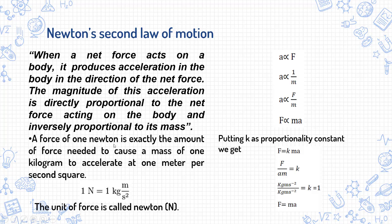A force of 1 Newton can be defined as exactly the amount of force needed to cause a mass of 1 kilogram to accelerate at 1 meter per second squared. It means 1 Newton is the force acting on a body of mass 1 kg and producing an acceleration of 1 m/s² in that body. So the unit of force is called Newton, represented by capital N, giving us F = MA as Newton's second law.